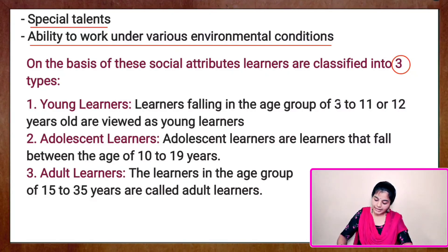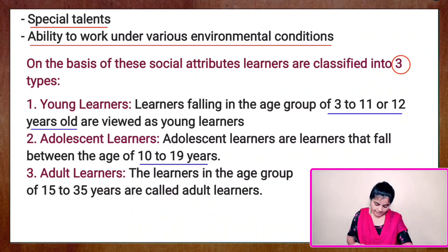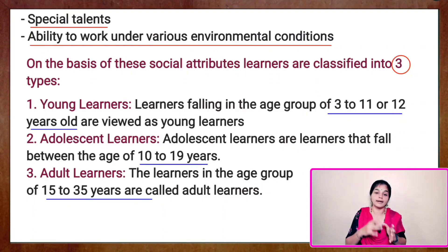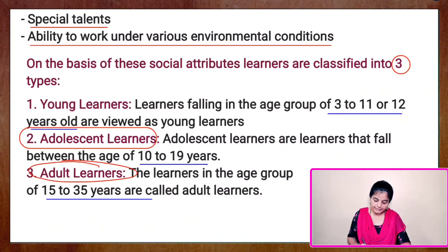Young learners fall under the age group of 3 to 11 or 12 years old. Adolescent learners fall between the age group of 10 to 19 years. Adult learners are those of the age group of 15 to 35 years. After a while, I will be discussing in detail about the characteristics of adolescent learners and adult learners.